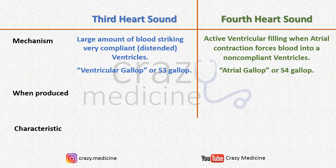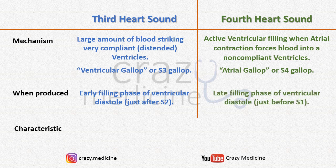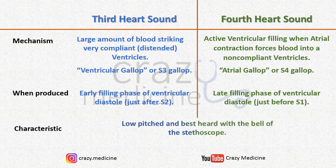S3 is produced during the early filling phase of ventricular diastole, just after S2. S4 is produced during the late filling phase of ventricular diastole, just before S1 of the next cardiac cycle. Both S3 and S4 are low pitched and best heard with the bell of the stethoscope.